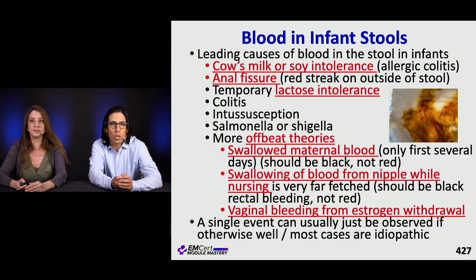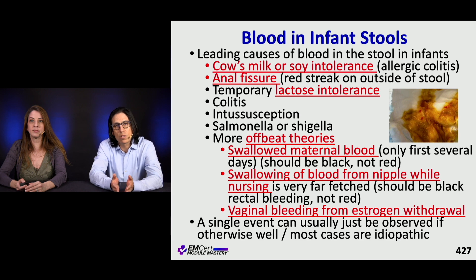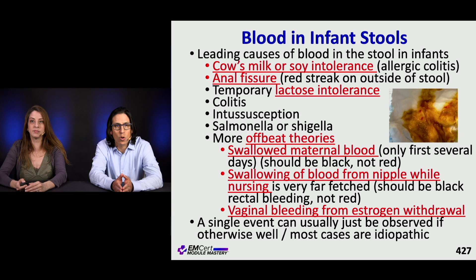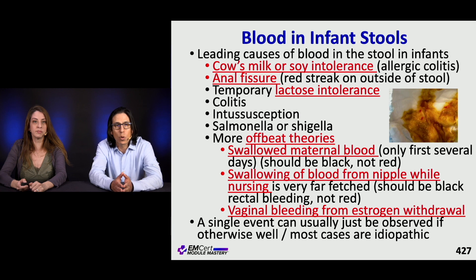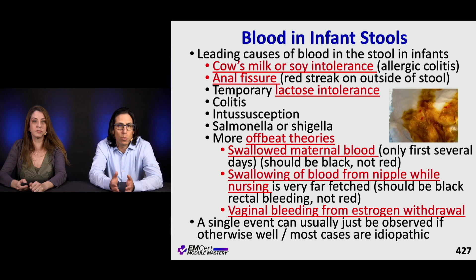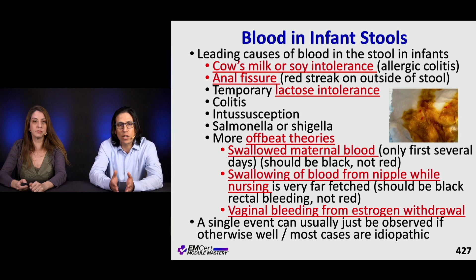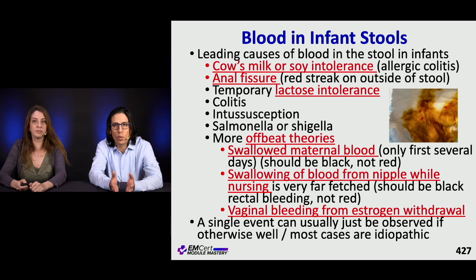Leading causes of blood in the stool of infants include allergic colitis — intolerance of cow's milk or soy — and anal fissures, really common when stools become firm. Transient lactose intolerance and colitis can also occur. More unusual causes include swallowed maternal blood, which should only occur in the first days of life and should be black, not red. Blood from cracked nipples during nursing should also be black since it's digested. Infantile vaginal bleeding from abrupt estrogen withdrawal in the perinatal period can occur; if it's a single event, you can usually watch it.